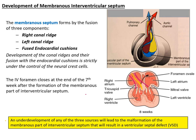This middle region between the atria and the ventricle is under the control of neural crest cells. If something happens during the migration of neural crest cells, that will result in the malformation of any of these structures.